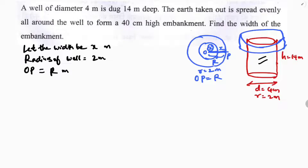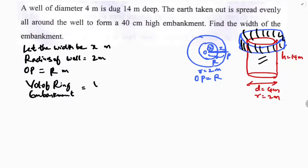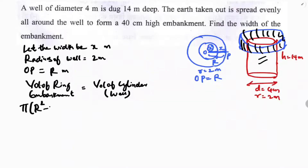The earth taken out from the well is evenly spread to make an embankment. The embankment is the shape of a ring. So volume of embankment equals volume of cylinder (the well). Volume of ring is π(R² − r²)h and volume of cylinder is πr²h. The height of the embankment is 40 centimeters.